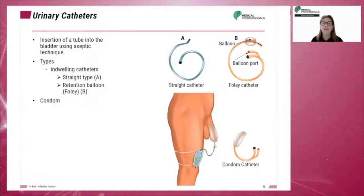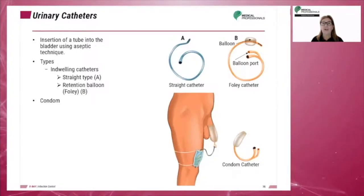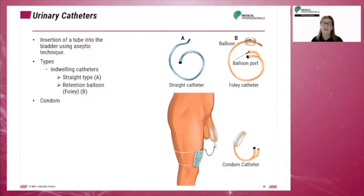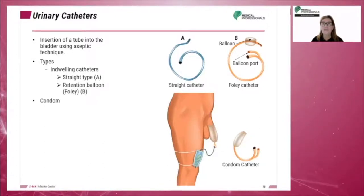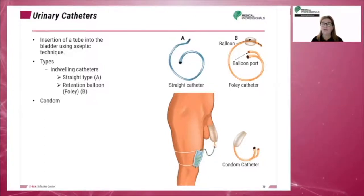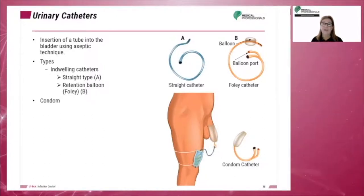A urinary catheter is a tube inserted into the bladder using the aseptic technique. In most instances, the radiologic and imaging science professionals do not catheterize patients. There are two main types of urinary catheters: the indwelling and the condom. There are two types of indwelling catheters: the retention balloon or Foley and the straight catheter.